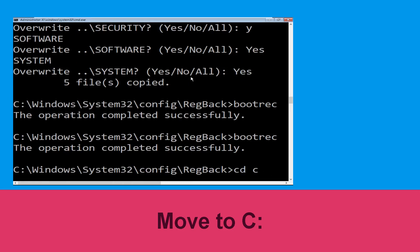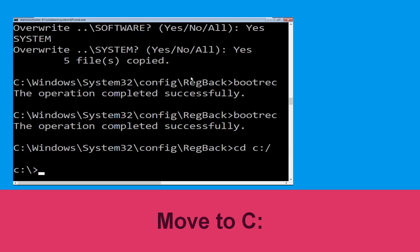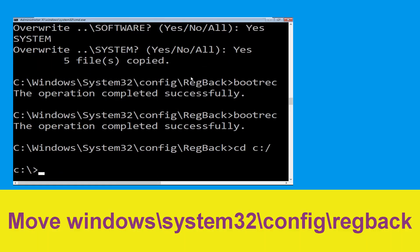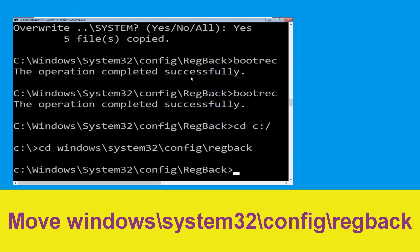Type: cd C:\ and hit Enter. Now execute this command: type cd windows\system32\config\regback and simply hit Enter to execute.